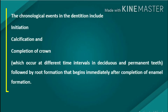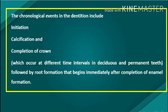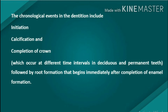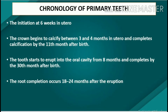The chronological events in the dentition include initiation, calcification, and completion of the crown, which occur at different time intervals in deciduous and permanent teeth, followed by root formation that begins immediately after completion of enamel formation. The completion of the root occurs two years after the eruption of the tooth.